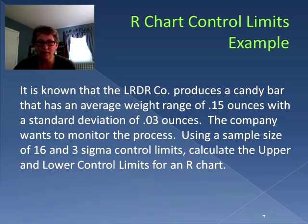Using the same process, now we know that the average weight range of the candy bar is 0.15 ounces with the standard deviation of the range being 0.03 ounces. Now the company is monitoring this process for the range. We're using the same sample size of 16 and we're still going to use three sigma control limits. So we're going to create the upper and lower control limits for the R chart.